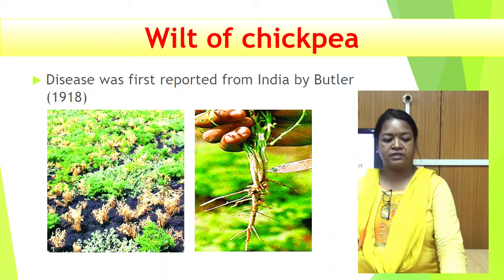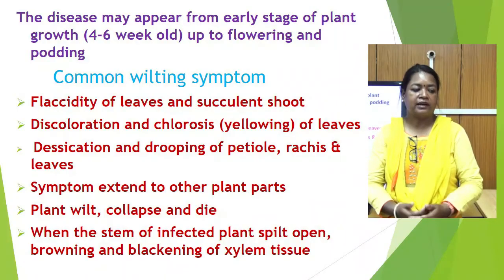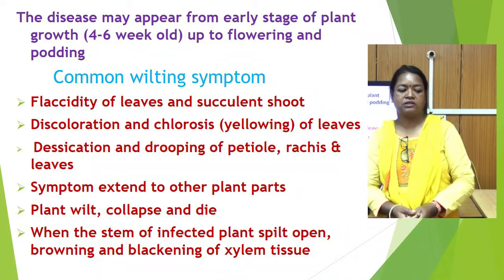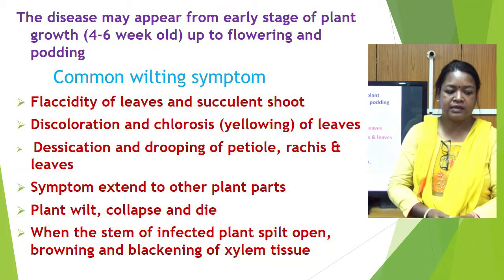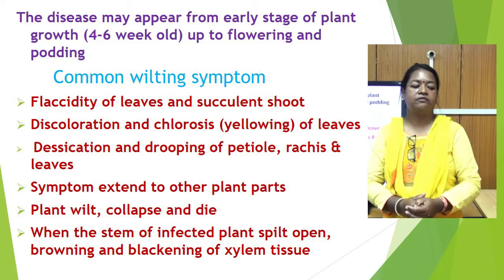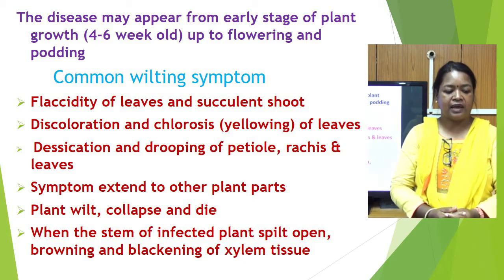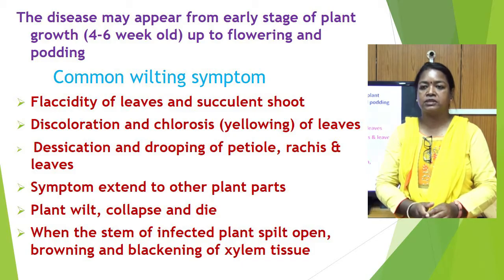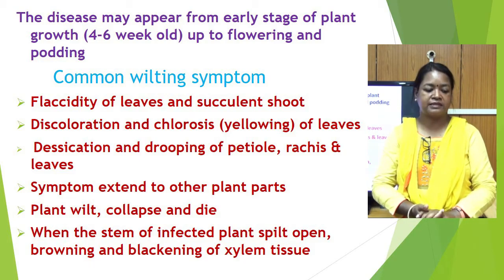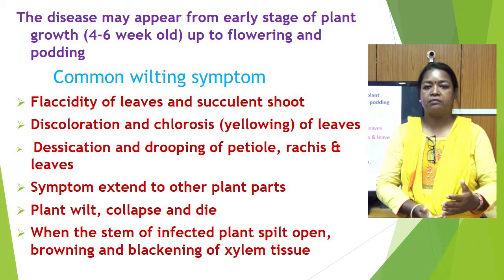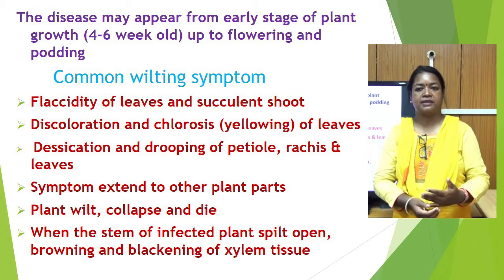Now coming to the wilt of chickpea, this disease was first reported from India by Butler in the year 1918. The disease appears from early stage of plant growth — young to old plants are first affected up to flowering and podding. Common wilt symptoms are flaccidity of leaves and succulent shoots, discoloration and chlorosis or yellowing of leaves, desiccation and drooping of petioles, rachis and leaves. The symptoms extend to other plant parts, and finally the plant wilts, collapses and dies.